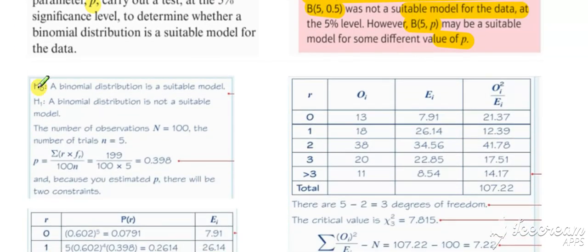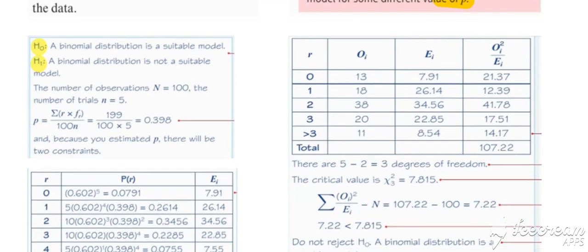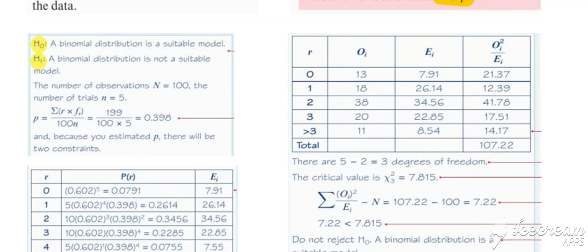Again, we're testing whether a binomial is suitable or not suitable. To work out our p value, as I mentioned before, you can use this formula, or if you prefer, you can just work out the mean of your values and then divide through by n.